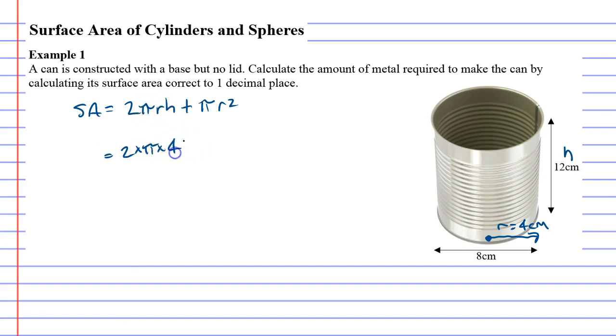When we're at this point all you can really do is just use a calculator. 2 times π times 4 times 12 plus π times 4 squared.